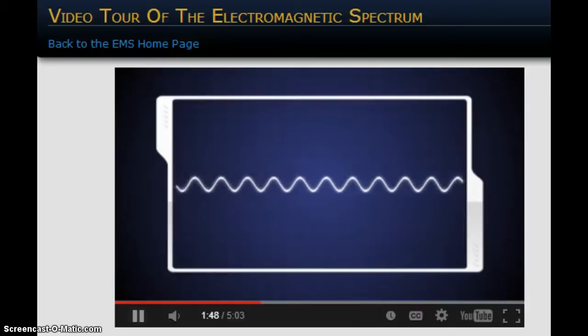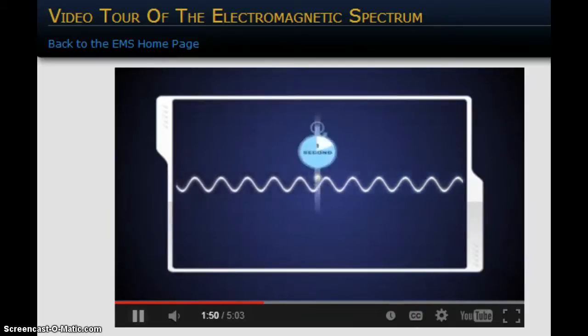The number of these crests that pass a given point within one second is described as the frequency of the wave. One wave, or cycle, per second, is called a hertz.